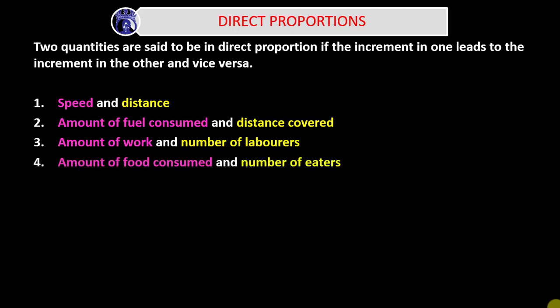Number four: amount of food consumed and the number of eaters. That's a really funny example. If you have a high number of eaters, then you have to consume more food. This is just a very simple, relatable example for anybody.